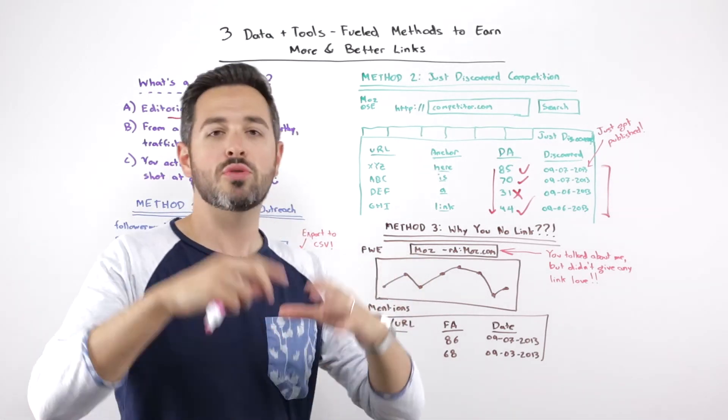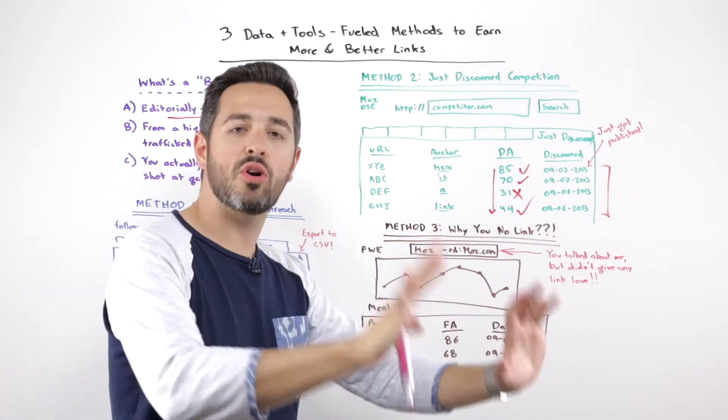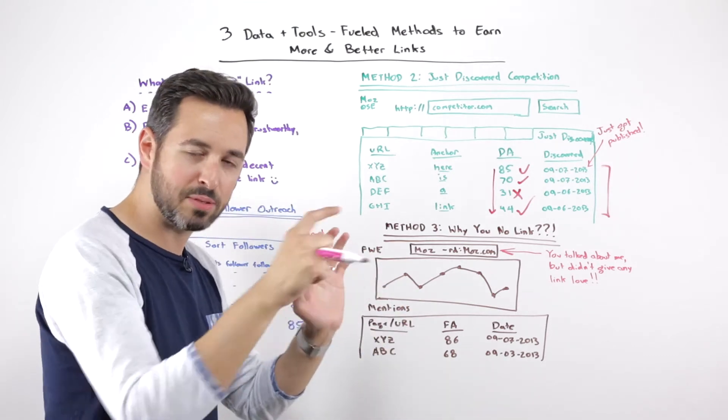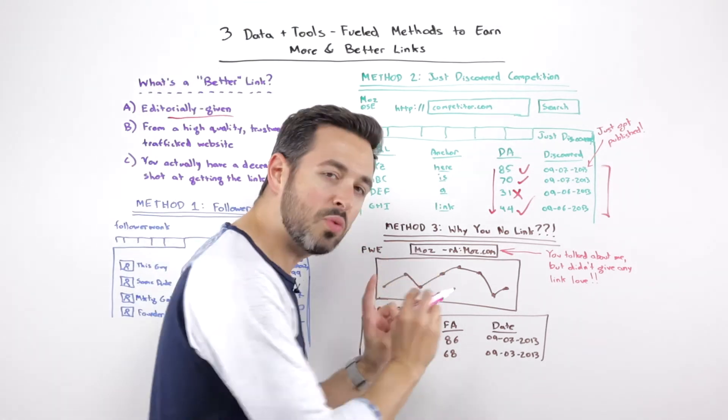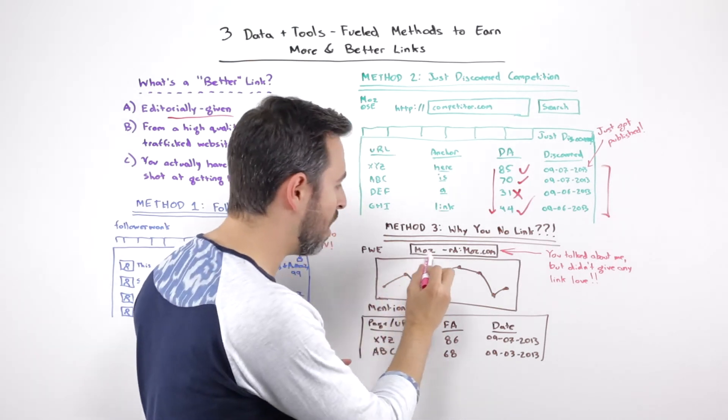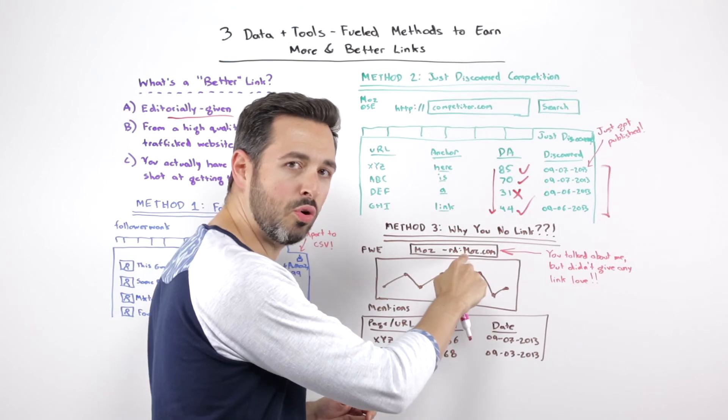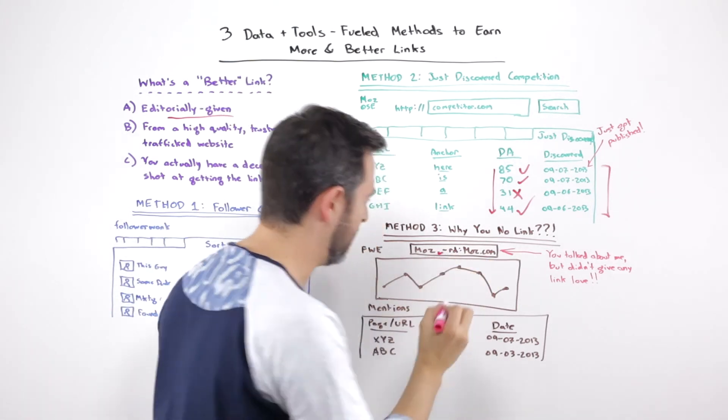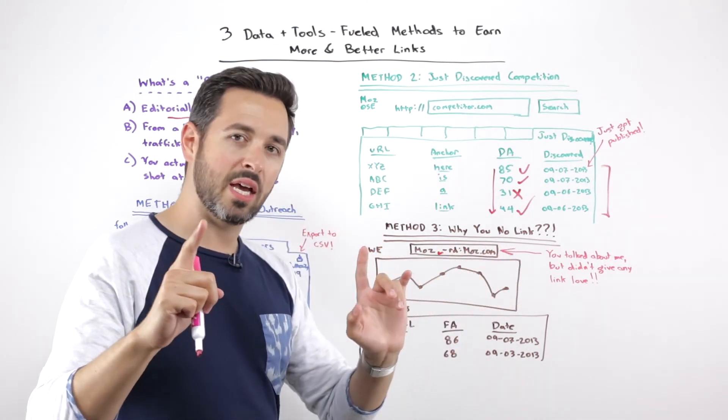So I know the Fresh Web Explorer search query, it's sort of like the Yahoo of old where you do very sophisticated link types of searches. So make sure you're familiar with all the modifiers. But this one in particular I love. It's Moz, my brand name, minus rd colon moz.com. And there's a space in between here, but no space otherwise.